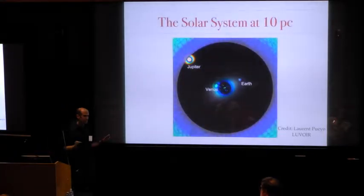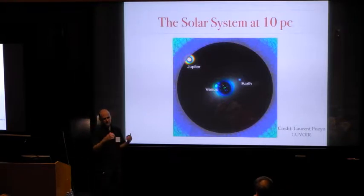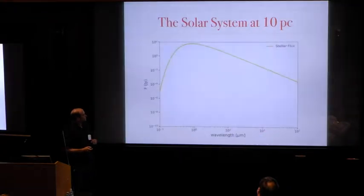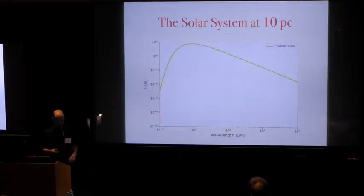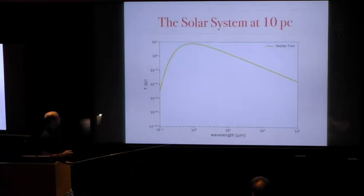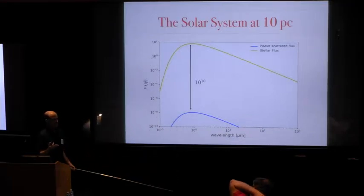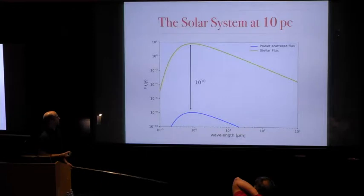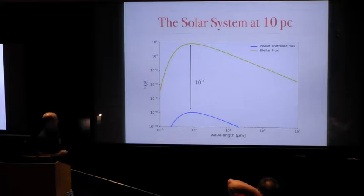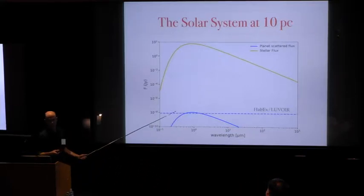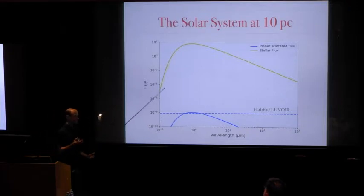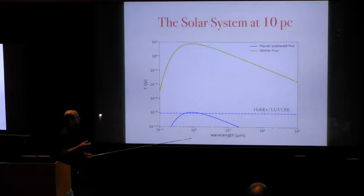We start with the big picture. Imagine we're trying to look at the solar system, but we place it 10 parsecs away from us. Here's the black body spectrum of the sun peaking in the optical, and now we ask how hard would it be to see the earth. It turns out that only about one in 10 billion photons that leaves the sun scatters off the earth to come towards us, so you need an instrument that's capable of achieving a contrast ratio of 10 to the 10.